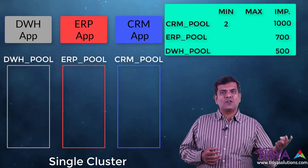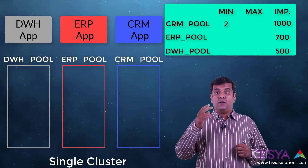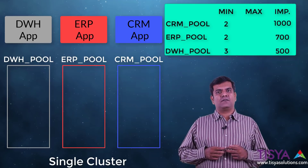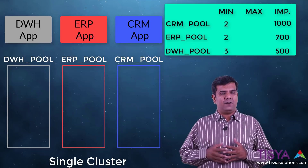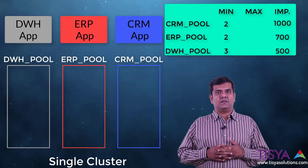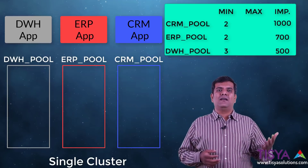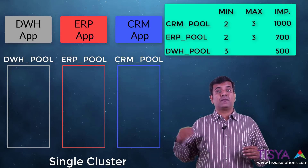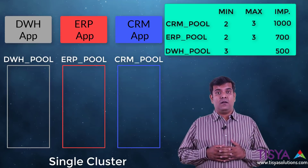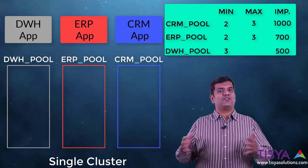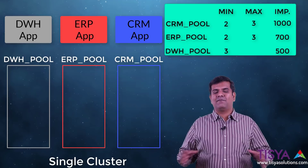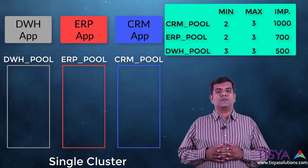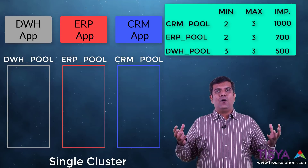For minimum nodes: CRM needs two, ERP needs two, and data warehouse needs three — because it does heavy work and deserves more resources as a baseline. For maximum nodes: CRM is three, ERP is three, and data warehouse is four (though we'll use three as the maximum since we only have nine nodes). Ideally this would require ten nodes total, but we'll work with nine.